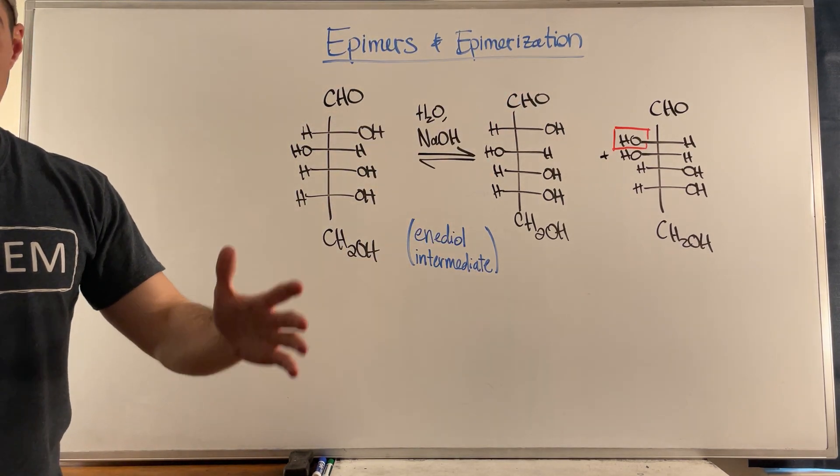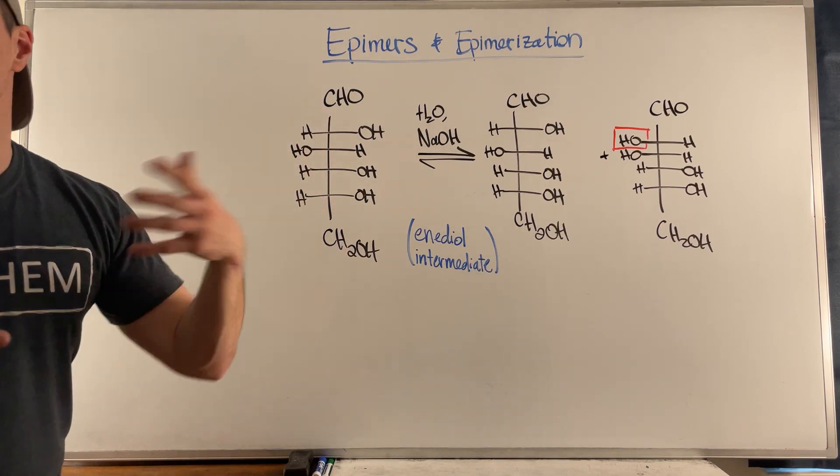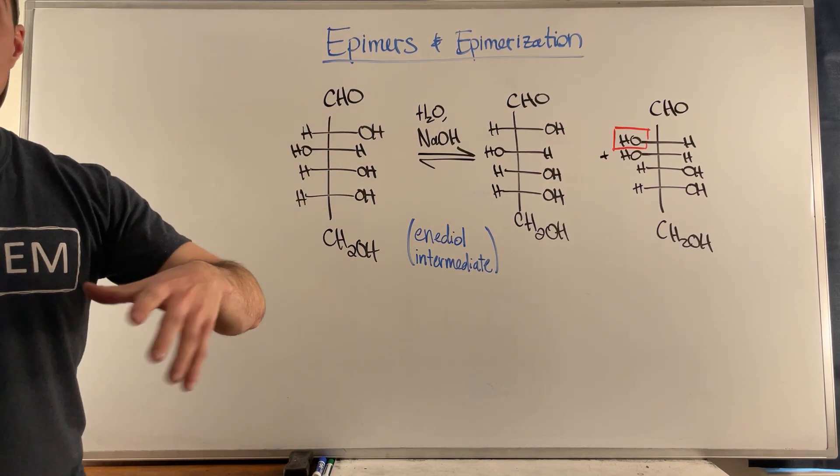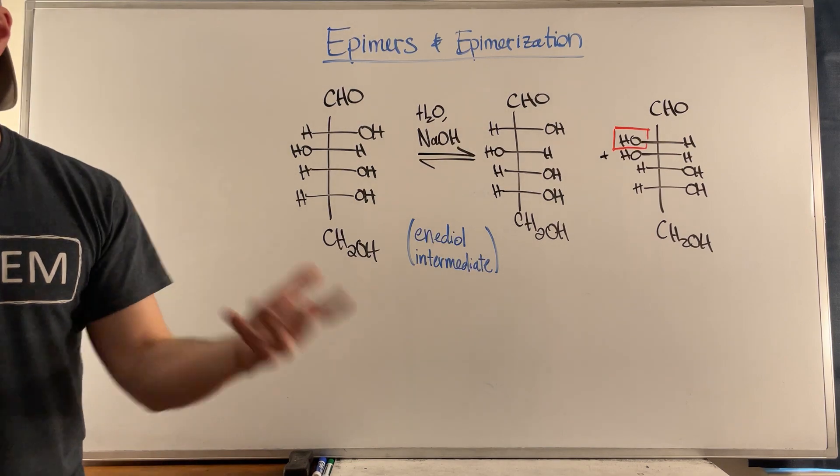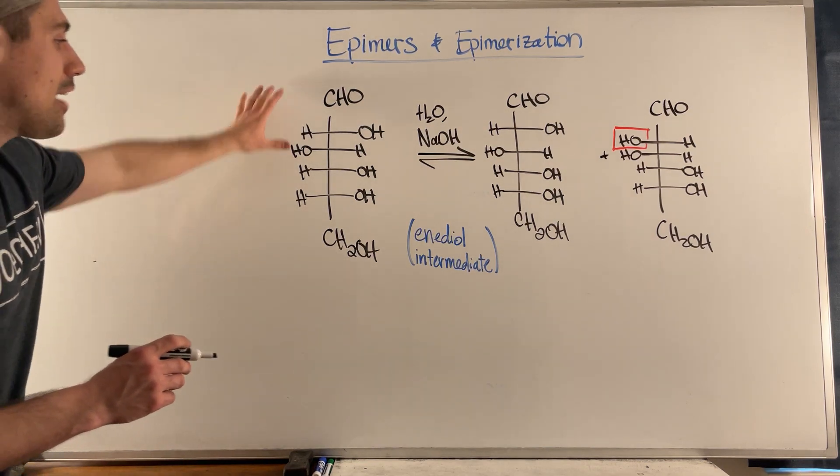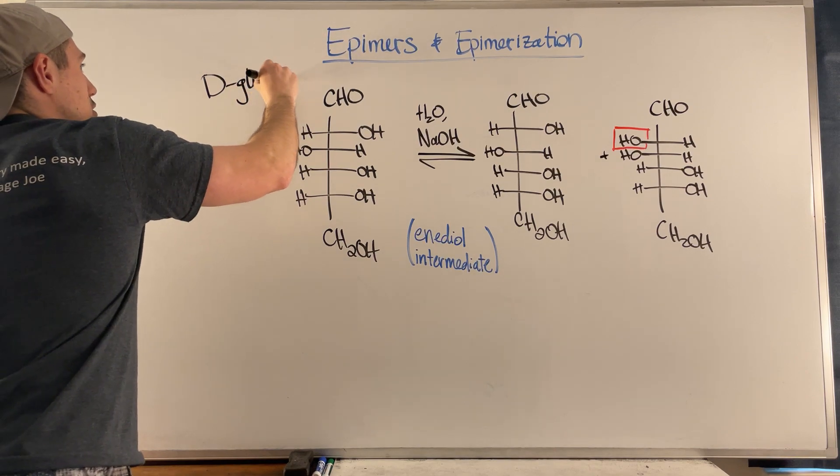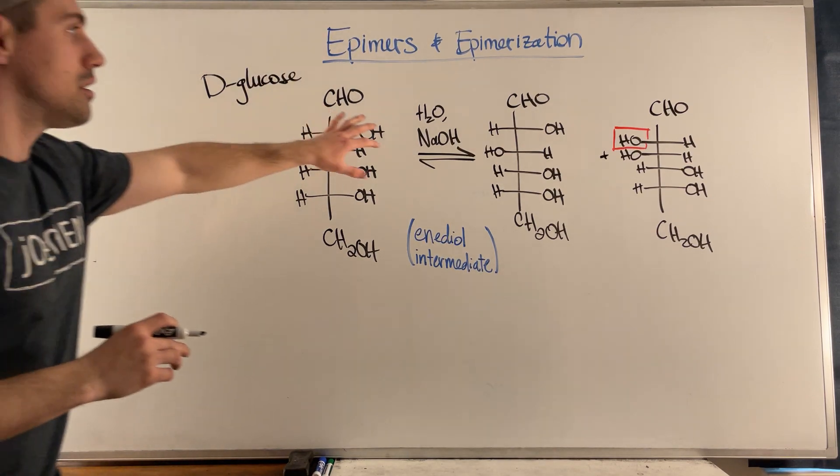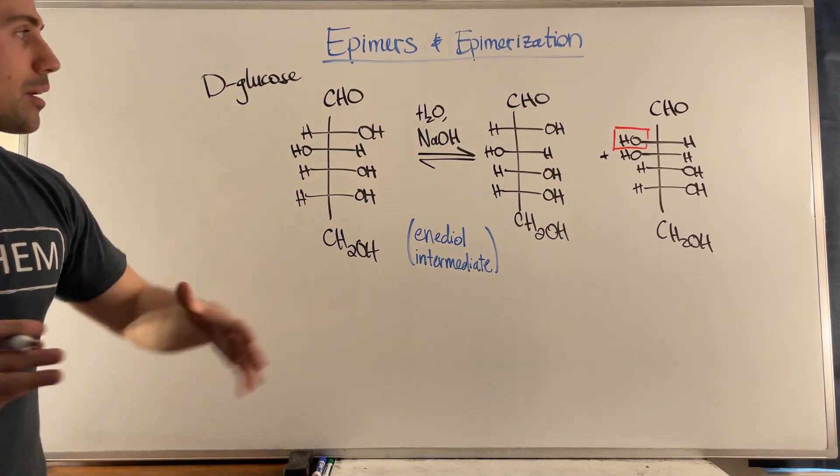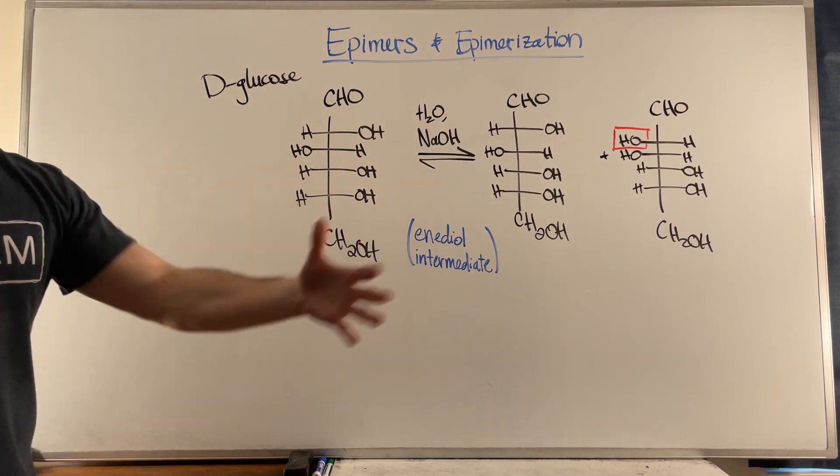So first off, I guess we'll talk about this and then we'll just mention what an epimer is, talk about if you're asked to draw an epimer, how you do that. So if we have something like this, and this is D-glucose right here, let's just say we have D-glucose in basic conditions, right? We have sodium hydroxide, intermediate base.